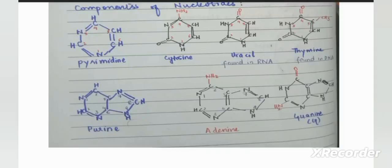The third component of nucleotides is nitrogenous bases. Nitrogenous bases include pyrimidines and purines. Purines are adenine and guanine, and both DNA and RNA contain adenine and guanine. Pyrimidines include cytosine, uracil, and thymine. Both DNA and RNA have cytosine, but uracil is found only in RNA and thymine is found only in DNA.